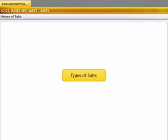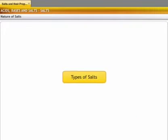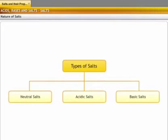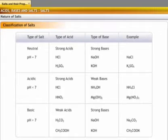Based on the strength of the reacting acid and the base, salts can be classified into three types. Salts formed from strong acids and strong bases are called neutral salts. They have a pH value of 7.